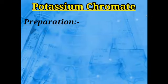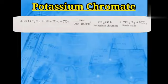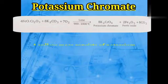As a result, potassium chromate and ferric oxide are obtained. The chemical reaction shows that the ore FeO·Cr₂O₃ reacts with 8 molecules of potassium carbonate in the presence of oxygen and lime, heated at 900 to 1000 degree Celsius, to give potassium chromate and ferric oxide.